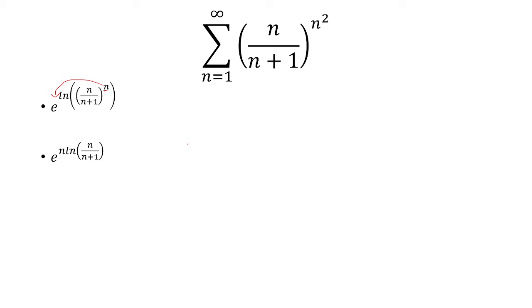And the next step I'm going to do is rewrite n as 1 over the reciprocal of n. So it's 1 over 1 over n is equal to n.